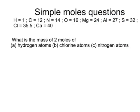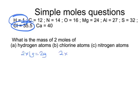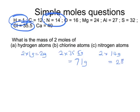A touch harder: what's the mass of two moles of hydrogen atoms? If one mole of hydrogen atoms is one gram, then it's two times one gram, which is two grams. For chlorine atoms, a mole of chlorine would weigh 35.5 grams, so two times 35.5 grams is 71 grams. And two moles of nitrogen atoms — one mole of nitrogen atoms would be 14 grams, so two times 14 grams would be 28 grams.